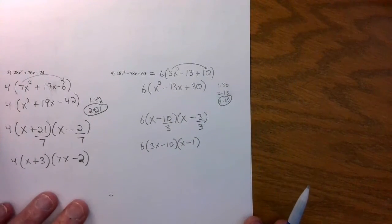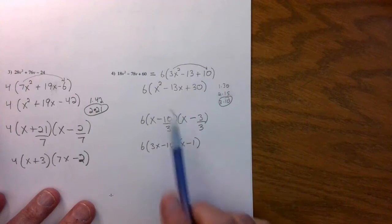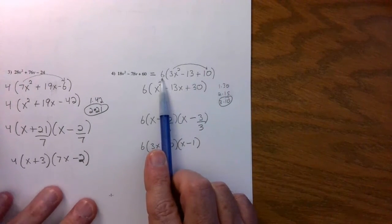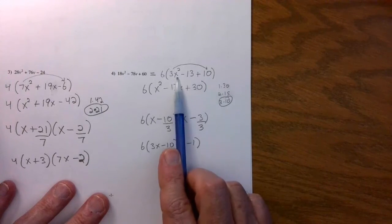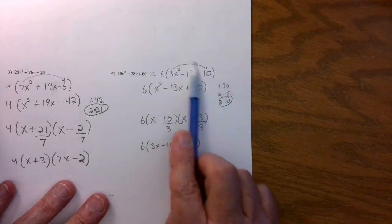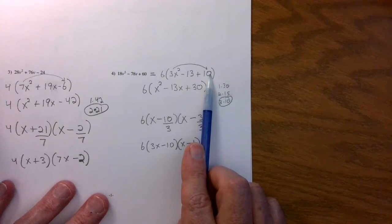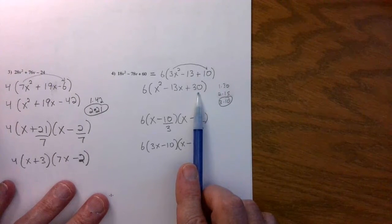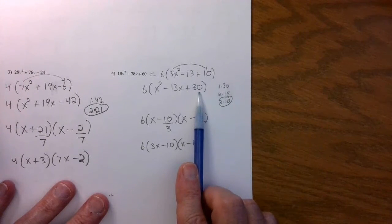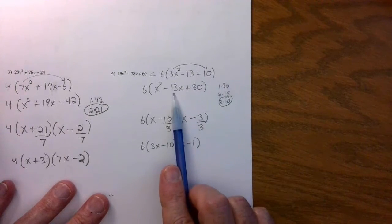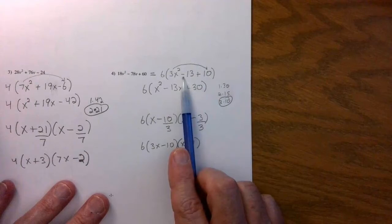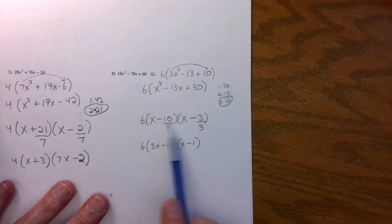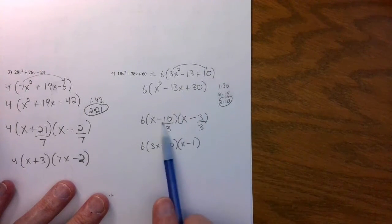And number four, the same thing. You have a greatest common factor of six, so just take it out. This is what you're left with. Because there's a three in front of the x squared, you have to slide it back. So three times ten is thirty. I go ahead and factor the thirty, looking for two numbers. When I add them together, I get thirteen. So I found three and ten. And remember, this is the one where they're both negative. You're adding up three and ten. Both negative.